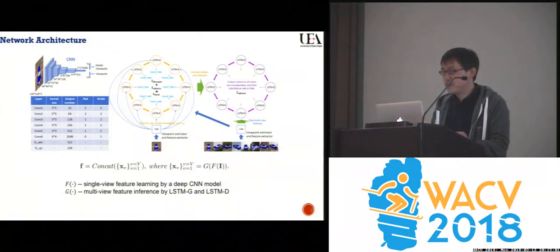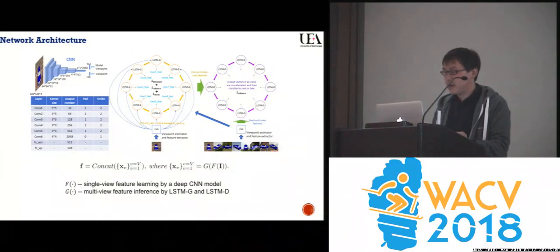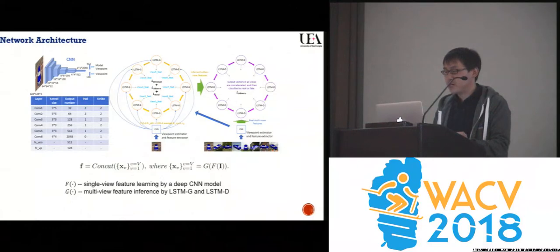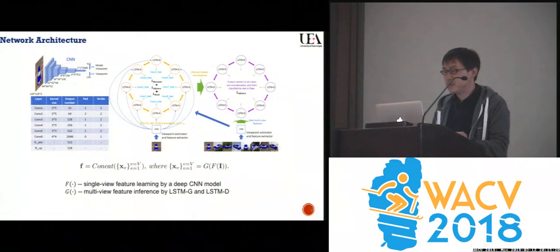The LSTM-D loop, which discriminates the real multi-view features and the generated features, is optimized against LSTM-G in an adversarial training architecture. In the training phase, we take the input vehicle's different view features both as the supervision for reconstruction loss and the real data inputs to train adversarial loss against the generated data.